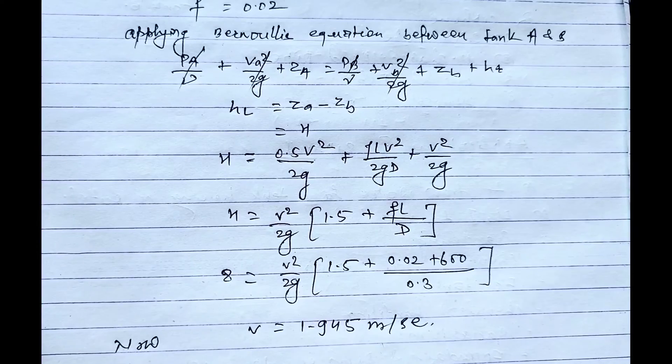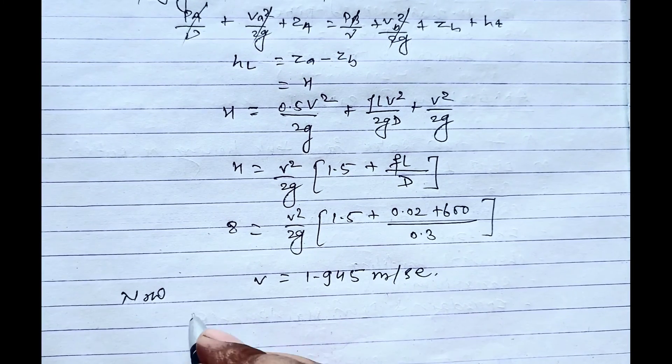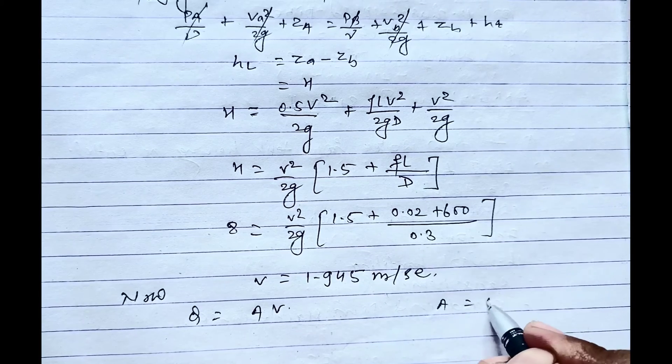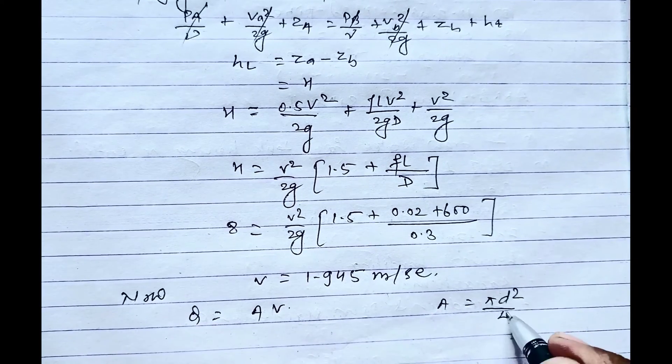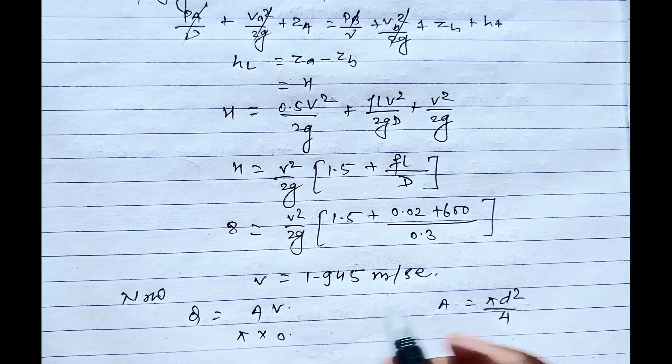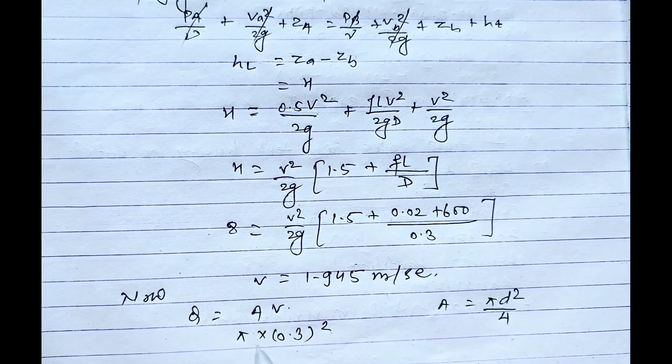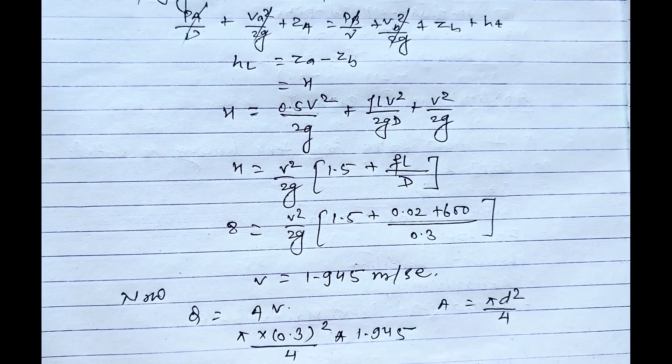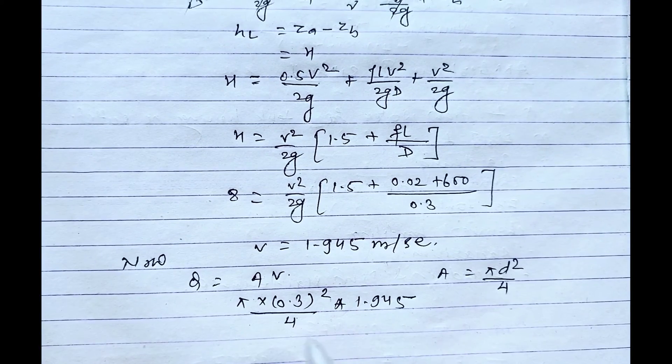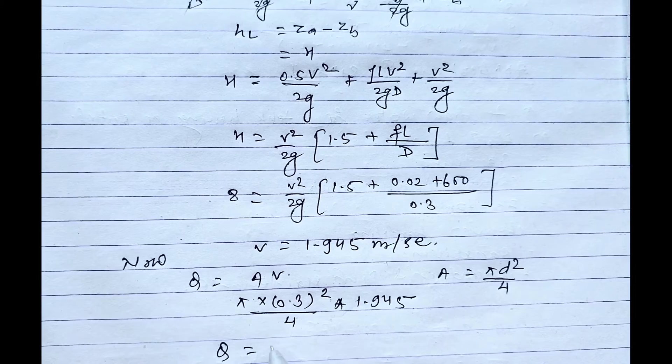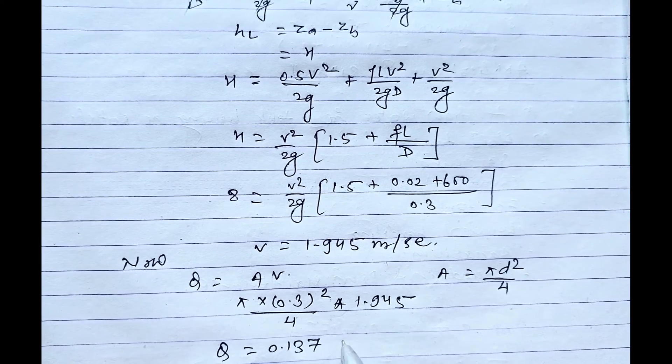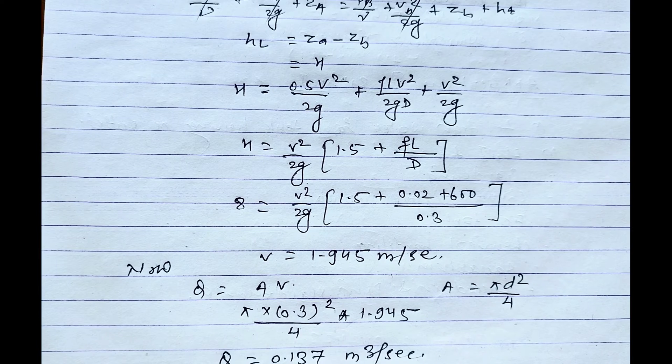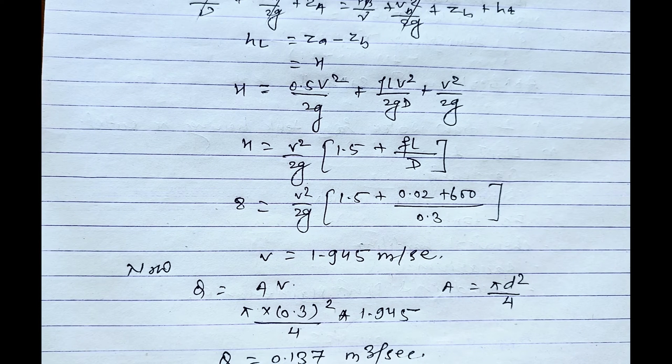Now using the formula of discharge Q equals A into V, where A equals πd²/4, that is π × 0.3²/4 into velocity 1.945. From this, the discharge Q equals 0.137 cubic meters per second, which is the required answer for the given question 1, that is discharge when siphon is running fully.